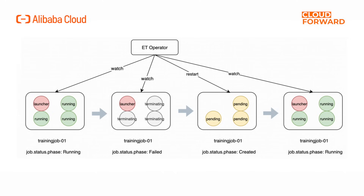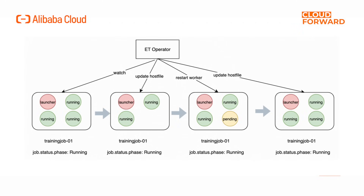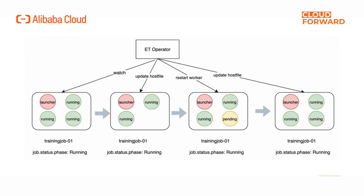Job recovery: when training resources become available again in the cluster, tasks that were suspended due to insufficient resources can be relaunched to continue training. Alternatively, distributed training tasks that were previously scaled down can automatically scale up to the preset replica count for training. Cost observability: when training using spot instances, overall training cost monitoring can showcase the cost savings introduced by elastic training based on spot instances.